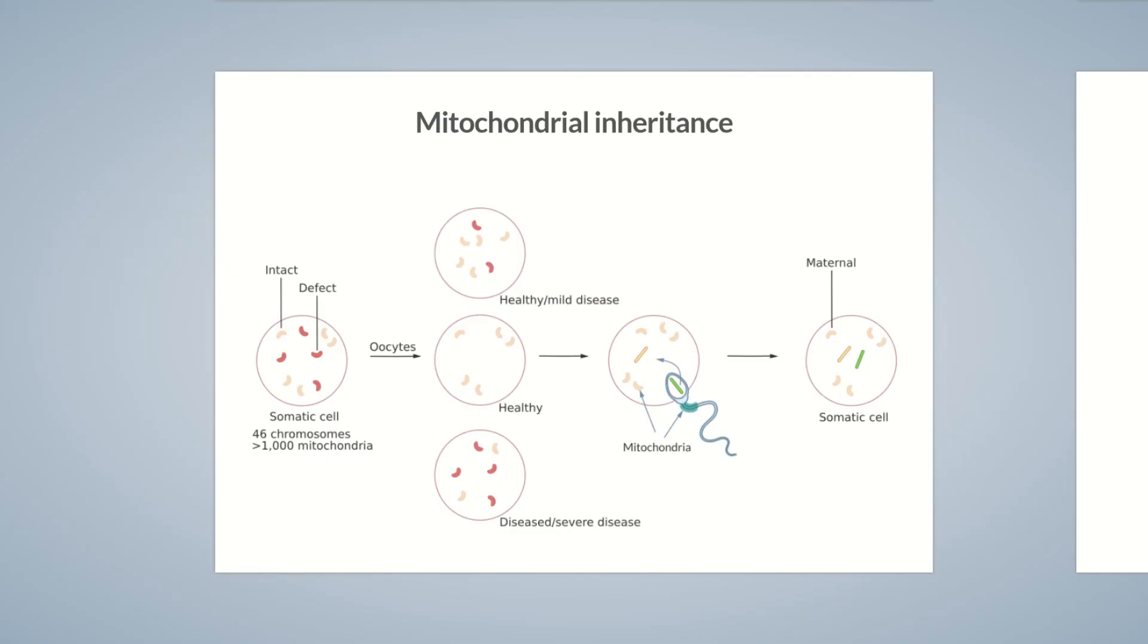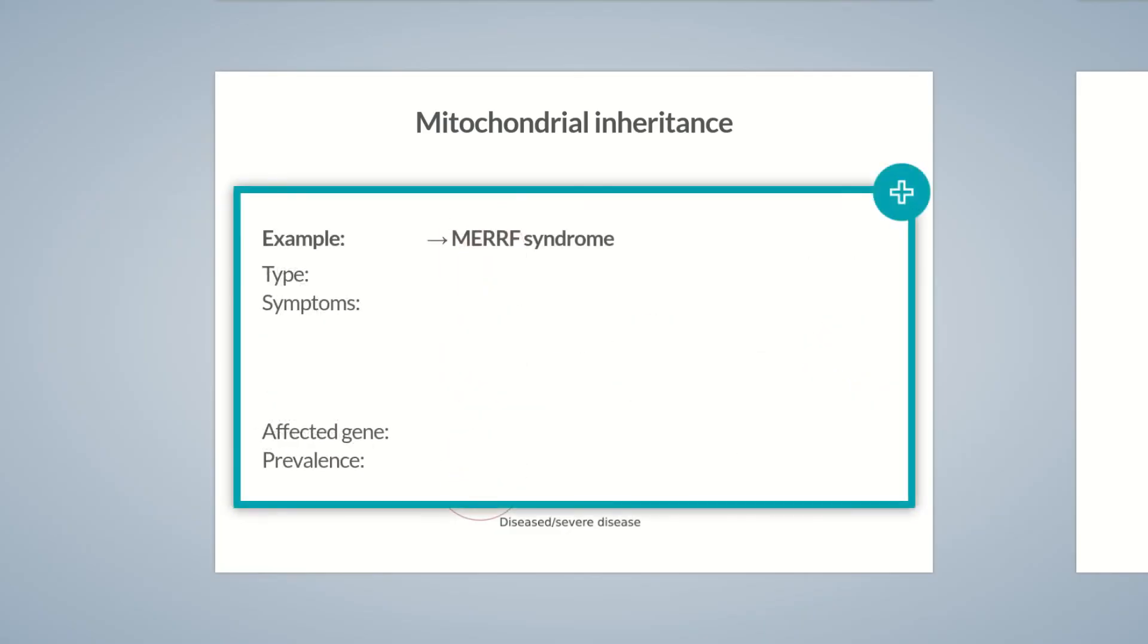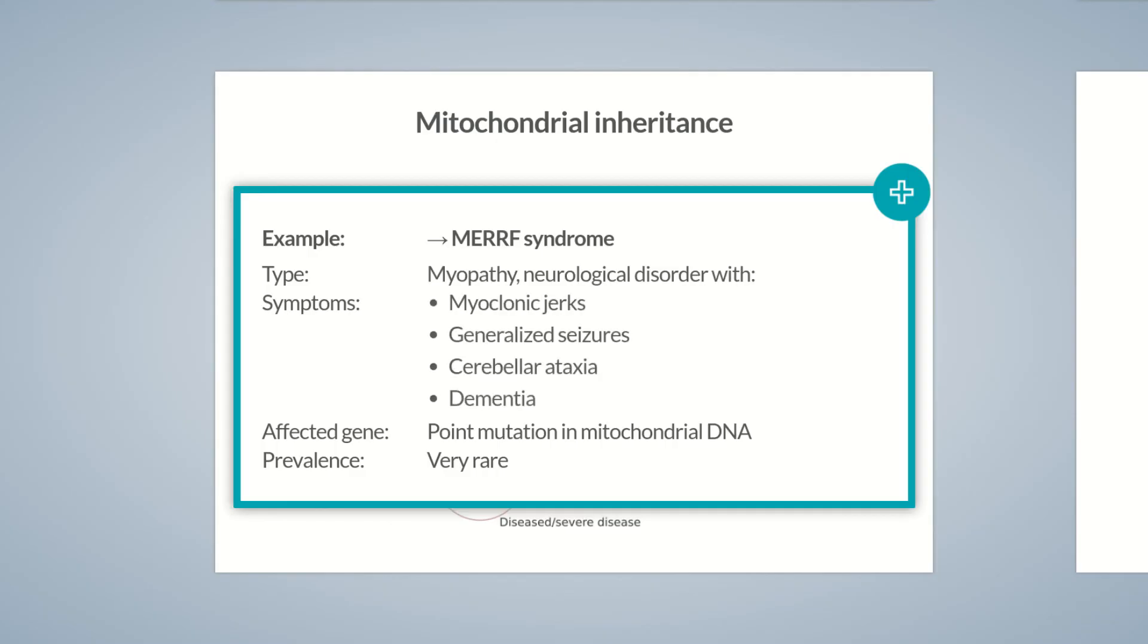An example of a mitochondrial inherited condition is MERF syndrome, which is the acronym for myoclonic epilepsy with ragged red fibers. In approximately 80% of cases, this extremely rare form of myopathy is caused by a point mutation in the mitochondrial DNA. Affected individuals develop neurological manifestations ranging from myoclonic jerks, generalized seizures, and cerebellar ataxia to dementia.